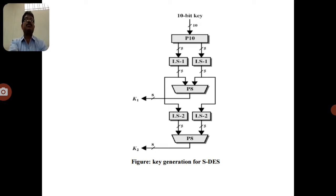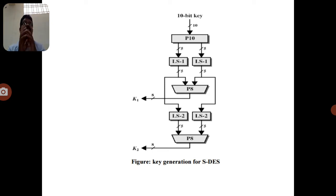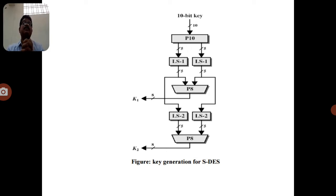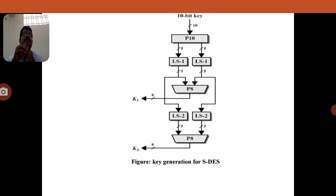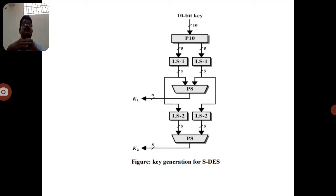The substitution techniques are divided into different categories: the first is the Caesar cipher, second is the Mono-alphabetic cipher, third is the Playfair cipher, fourth is the Poly-alphabetic cipher, and fifth is the Hill cipher. Under transposition techniques, the only technique is the rotor machine.